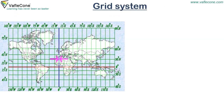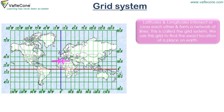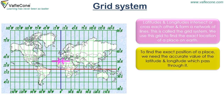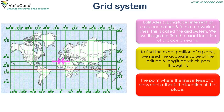Latitudes and longitudes intersect or cross each other and form a network of lines called the grid system. We use this grid to find the exact location of a place on earth. To find the exact position of a place, we need the accurate value of the latitude and longitude which pass through it. The point where the lines intersect or cross each other is the location of that place.